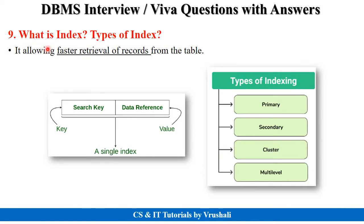The next question is: what is an index and what are the types of index? In DBMS, an index can be used to allow faster retrieval of records from the table. Every record has a particular search key and a data reference, which is the actual original address where a particular data is stored. An index uses the search key value to access a particular record. There are total four types of index: primary index, secondary index, and cluster index.